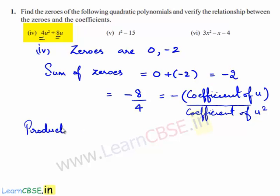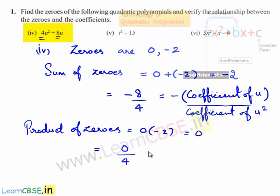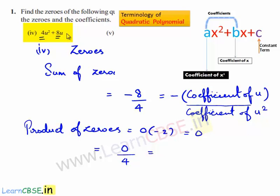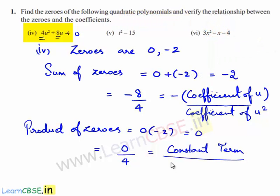The product of zeros is equal to 0 multiplied by minus 2, which is 0. This is equal to 0 divided by 4. Since we don't have the constant term, the constant term is 0. So the product of zeros is related to the coefficients as constant term divided by the coefficient of u squared.